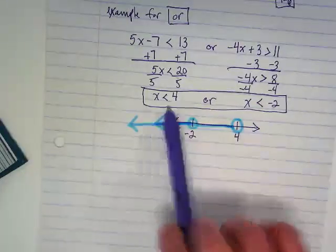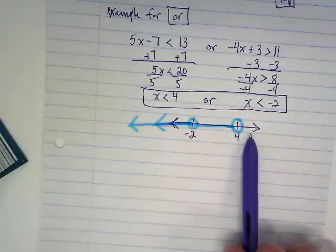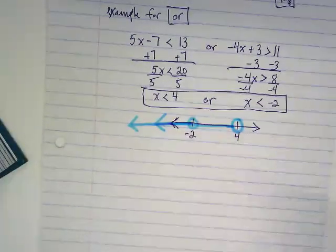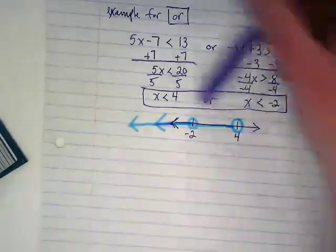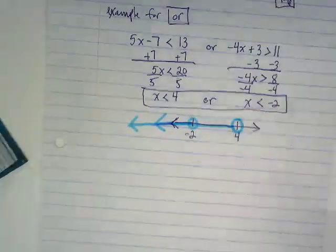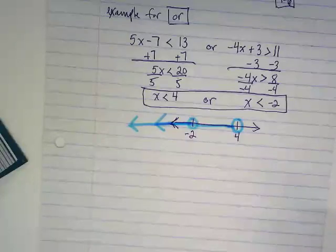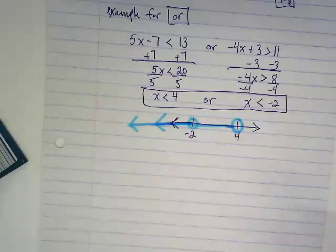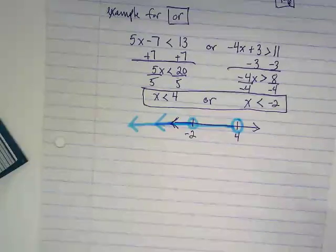And so because these are combined, it's really anything less than 4 makes both inequalities true, except the negative 2 only works for this one. It's kind of a rare one, but they happen. So I like that that was an example.